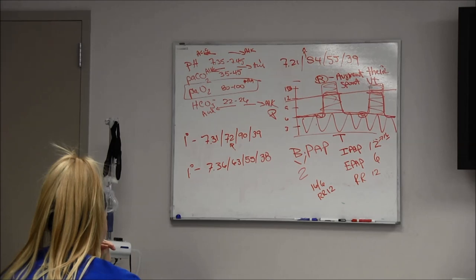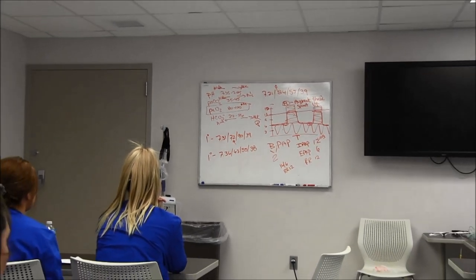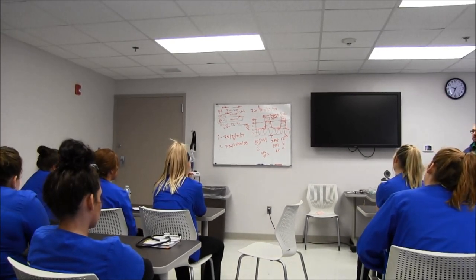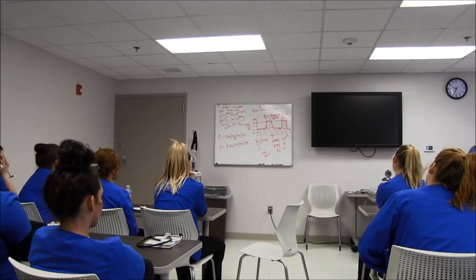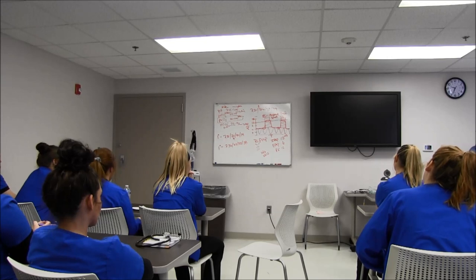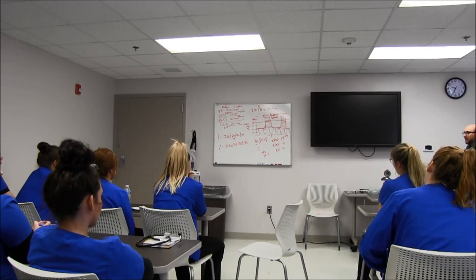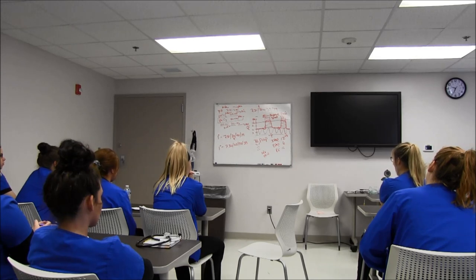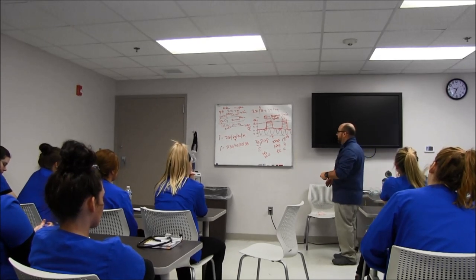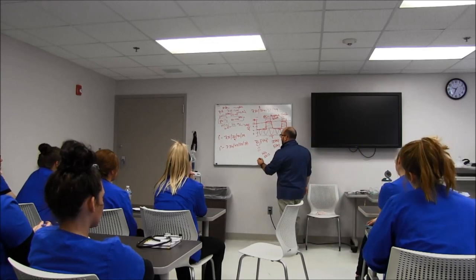There's the next one: 7.36, 63, 55, 38. So what's the reading for it? It's fully compensated. Nice! Fully compensated respiratory acidosis. So what's the thing that kind of red flags you a little bit? The oxygen. Absolutely. Their oxygen went down. So we treat their ventilation, their oxygen went down. Now it's not common to happen, I'm doing it for this example. I'm going to make a BiPAP change for this.